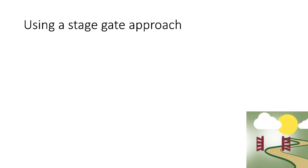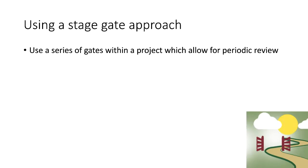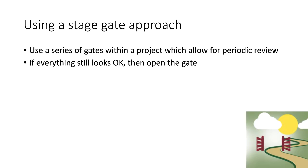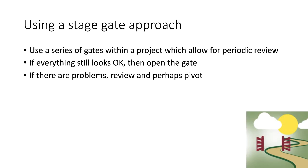A powerful way of handling this is to use what's called a stage gate approach. It's a very simple principle — we introduce a series of gates within a project which allow us to pause for a periodic review. When we come to a gate, if everything still looks okay — the technology works, the market still looks promising, the competitors are quiet — then we open the gate, move forward, and commit further resources. But if there are problems, it's crucial that we stop, review what's going on, and then make a decision. That decision could well be to pivot the project — to move it in a slightly different direction to take account of whatever unexpected development has taken place.